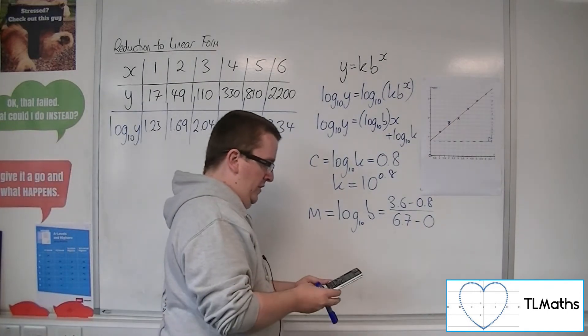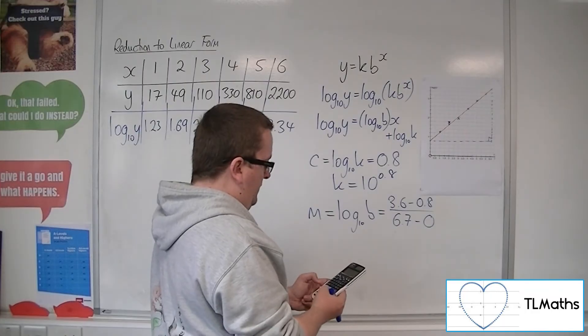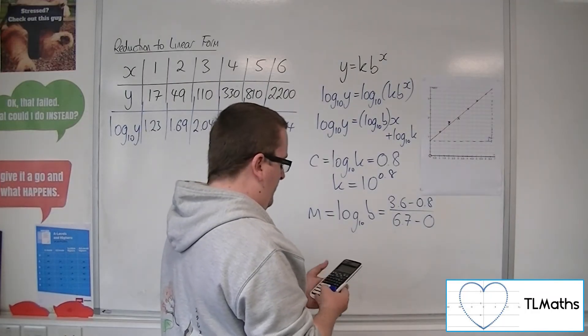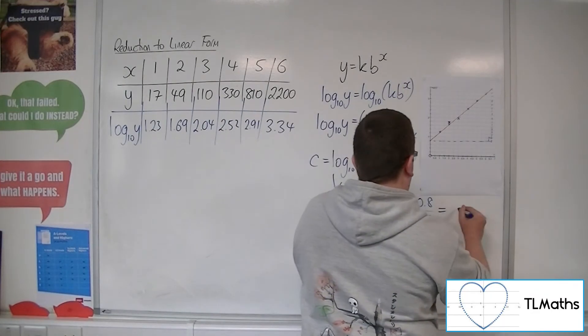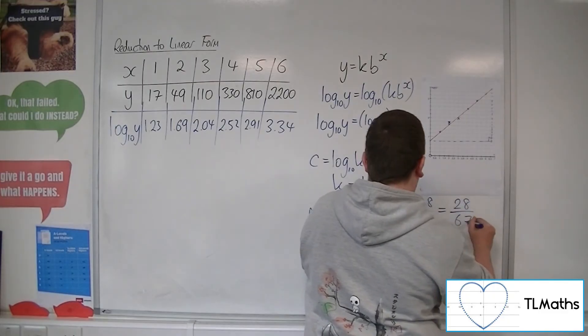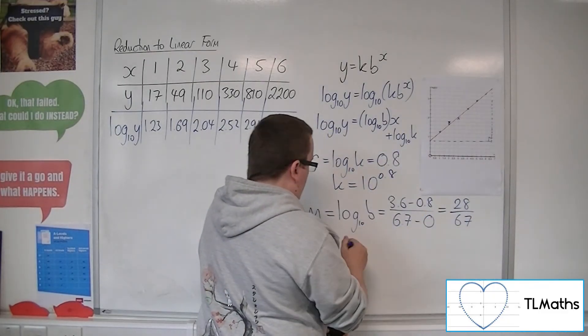So we've got 3.6, take away 0.8, divided by 6.7, which is 28 over 67. So if log 10b is 28 over 67, then b is 10 to the 28 over 67.